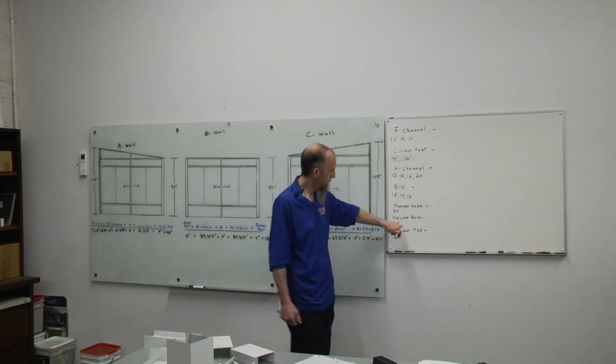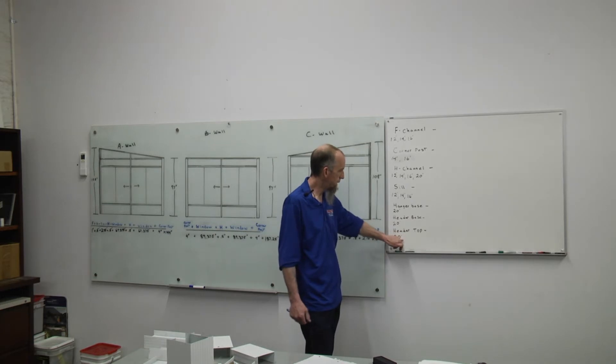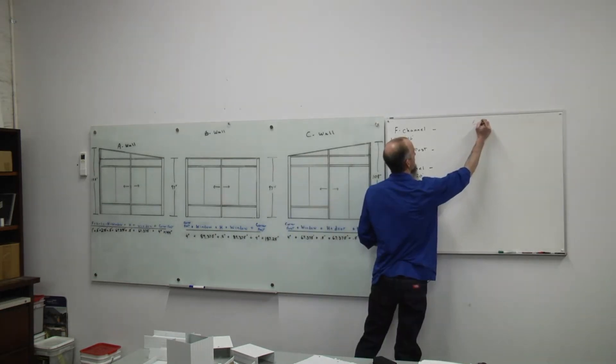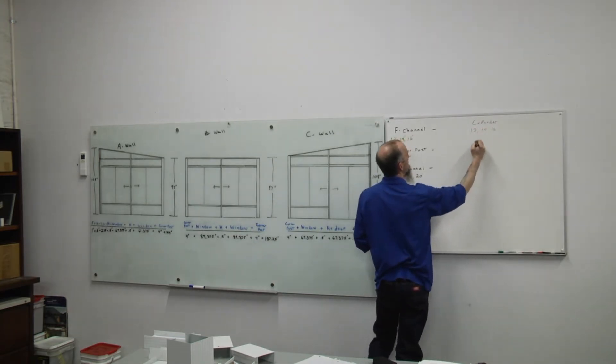Hangar base, 20 foot. Our header base, 20 foot. And our header tops are 20 foot. We'll also have our expander comes in lengths 12, 14, and 16. And our post sleeve cap comes at 14 foot.